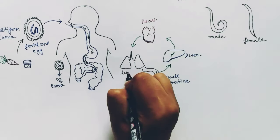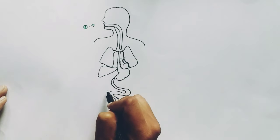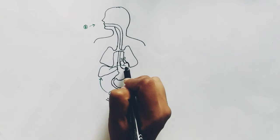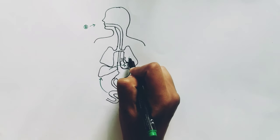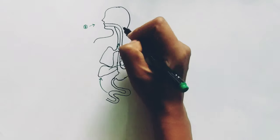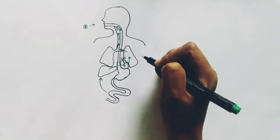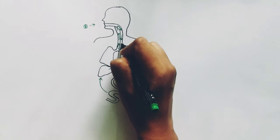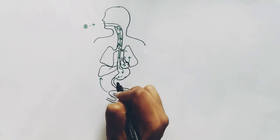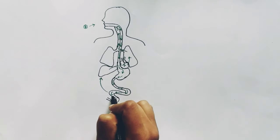So let's do a quick recap: the egg enters through the mouth, releases the larva in the intestine, and from the intestine the larva goes to the liver, to the heart, and then to the lungs. From the lungs, it travels upward to the trachea, goes to the mouth, and gets swallowed again down the food pipe. It travels downward through the food pipe and reaches the small intestine again, where it undergoes its fourth molting.